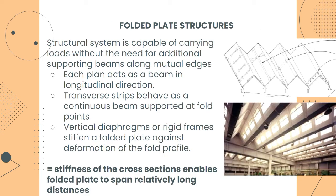The structural system is capable of carrying loads without the need for additional supporting beams along mutual edges. Each plate or flat surface acts as a beam in the longitudinal direction. Transverse strips behave as a continuous beam supported at fold points. Vertical diaphragms are rigid frames that stiffen a folded plate against deformation of the fold profile. The stiffness of the cross section enables the plates to span relatively long distances.